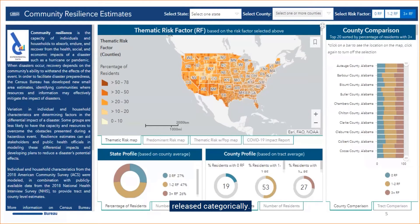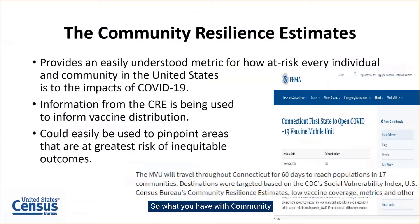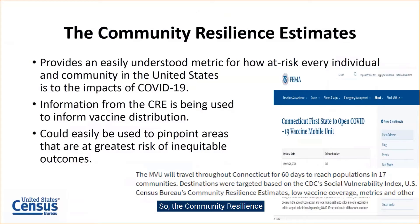What you're seeing right now is a screenshot of the dashboard I'm going to give a live demonstration of in just a minute. What you're looking at is the rate of the population living with three or more risk factors — the darker the county, the higher the percentage of the population living with three or more risk factors. With Community Resilience Estimates, you have an easily understood metric for how at risk every individual and community in the United States is to the impacts of COVID-19. Although the Community Resilience Estimates are a new data product, they're already being used to inform vaccine distribution and resource distribution. The CRE can easily be used to pinpoint areas at greatest risk of inequitable outcomes, going down to the individual level and maintaining a correlation of individual risk with up to 11 risk factors.